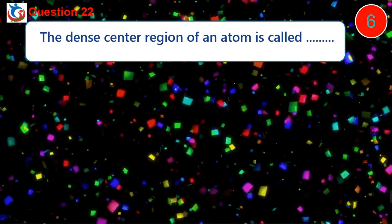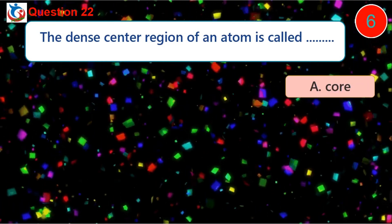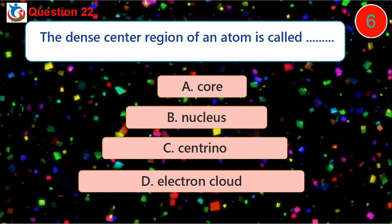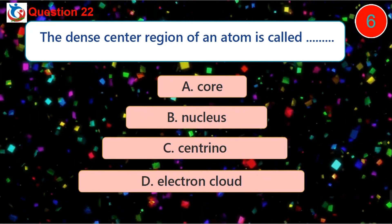Question 22. The dense central region of an atom is called dash. A. Core B. Nucleus C. Centrino D. Electron cloud.